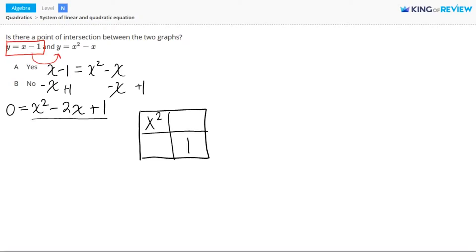Which two terms multiply together to give x squared? Well, x times x multiply together to give x squared. And which two terms, or numbers, multiply together to give 1? One option is negative 1 times negative 1. Filling out the rest of the box, negative 1 times x is negative 1 x, and x times negative 1 is negative 1 x.